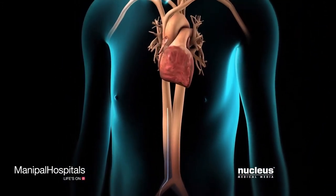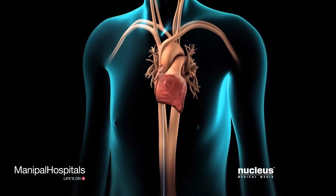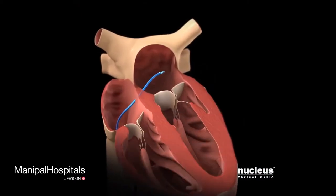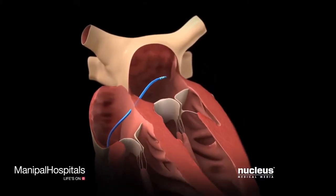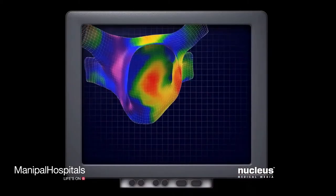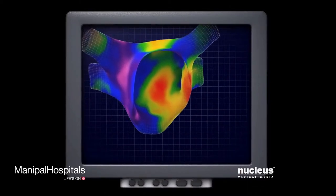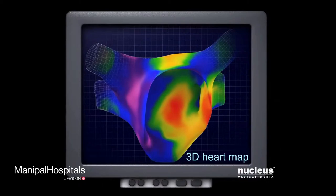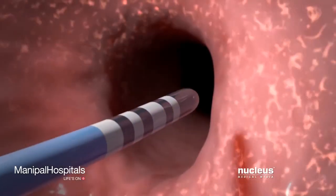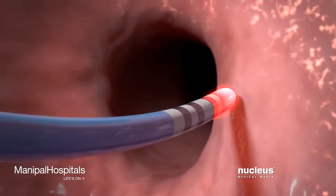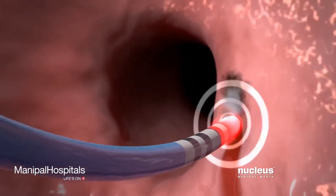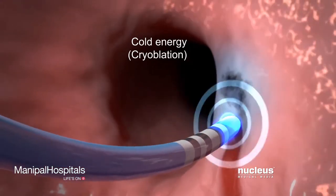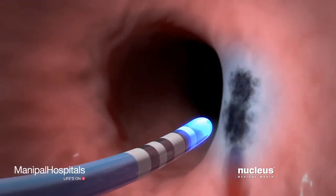The location and progress of the catheter will be monitored. When the catheter reaches the heart, the doctor will guide it to the area that is causing the arrhythmia, using a 3D map of the electrical activity of the patient's heart. The tip of the catheter will emit either hot energy or cold energy to ablate the tissue in this area, making the treated area stop working.